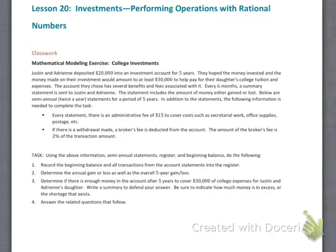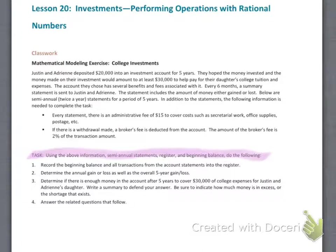Here's our scenario: Mathematical Modeling Exercise — College Investments. Justin and Adrian deposited $20,000 into an investment account for five years. They hoped the money invested and the money made on their investment would amount to at least $30,000 to help pay for their daughter's college tuition and expenses.